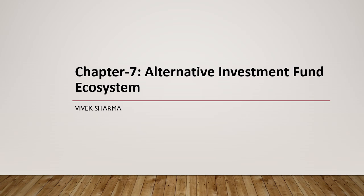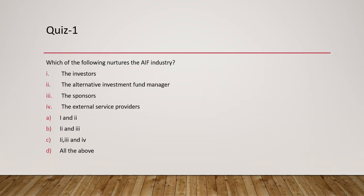The first question is: which of the following nurtures the AIF industry? If the alternative investment fund industry has to grow, it needs support. The options are: investors, alternative investment fund managers, sponsors, or external service providers such as custodians. The answer is all of the above — AIF needs all four of them. You need investors to invest, a fund manager to manage, sponsors to start it, and external service providers like custodians to help it operate.